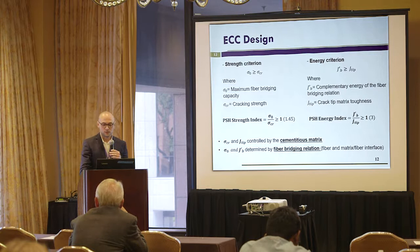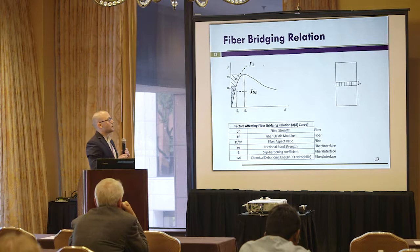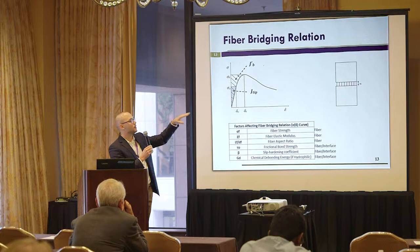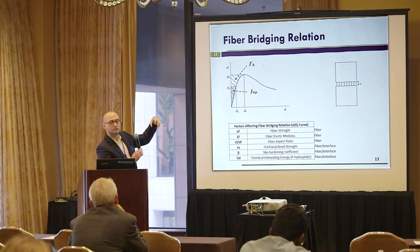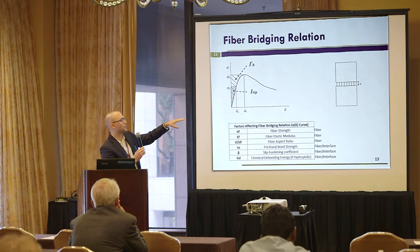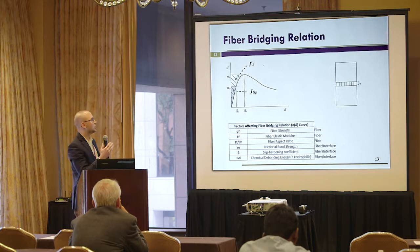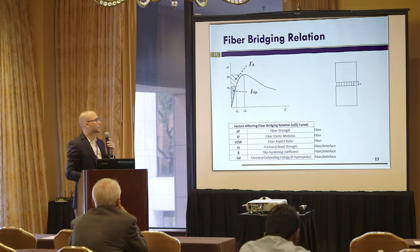This is the fiber bridging relation. Basically, you have two pieces: once you have the crack, the two pieces of cementitious matrix are bonded together with the fibers. As you pull apart these two pieces, you have a stress-deformation curve that accounts for the pull-out mechanism of the fiber as well as the elastic deformation. Jb is the complementary energy, which is the area to the left of the peak of that curve.